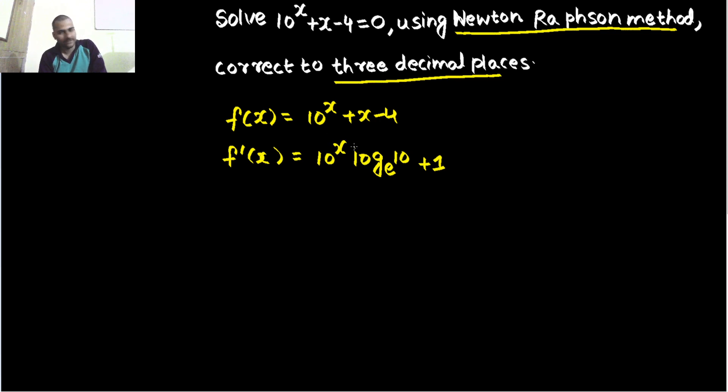What will be the value of x? We will put that and we will see accordingly. f(x) and f'(x) is in front of us. Now, let us check for the interval in which it is changing from positive to negative or negative to positive. If you check for 0, 10^0 is 1 plus 0 is 1 minus 4, so that is -3. What about 1? It will be 10 + 1 = 11 - 4 = 7. So your root lies between -3 and 7.